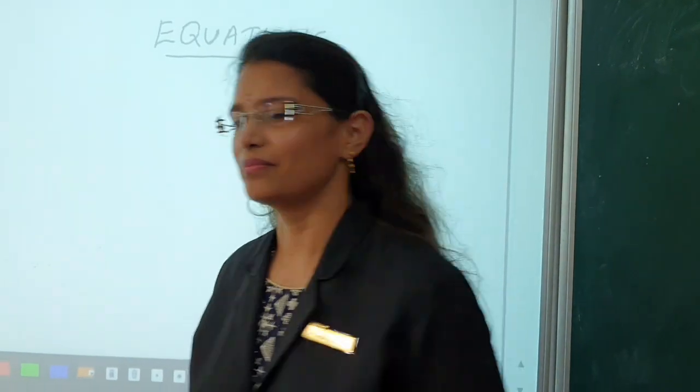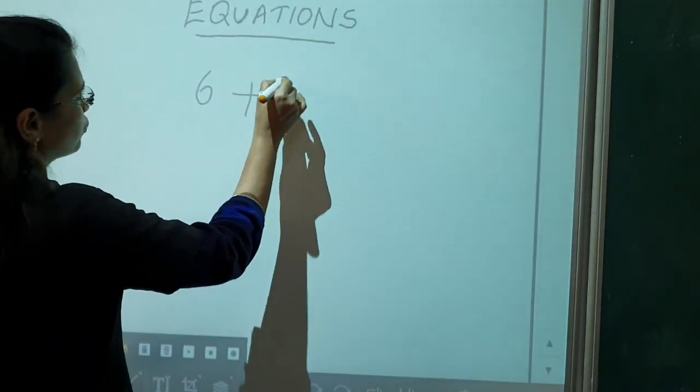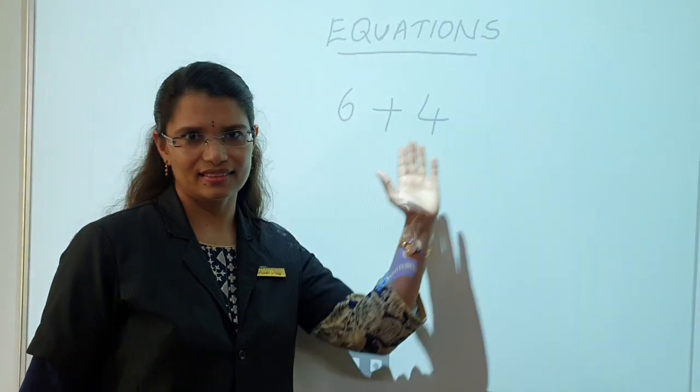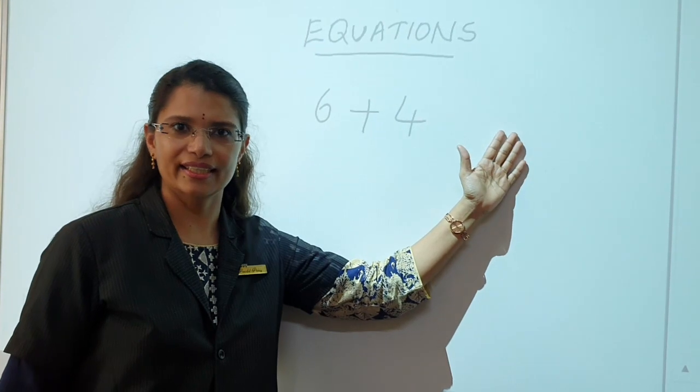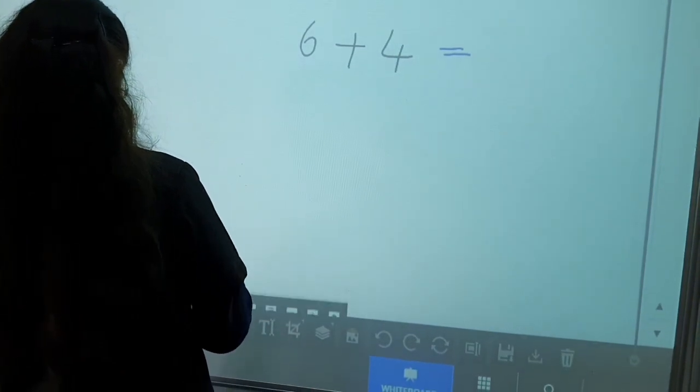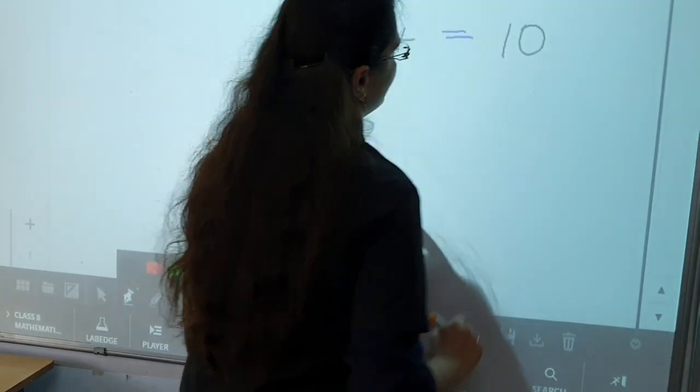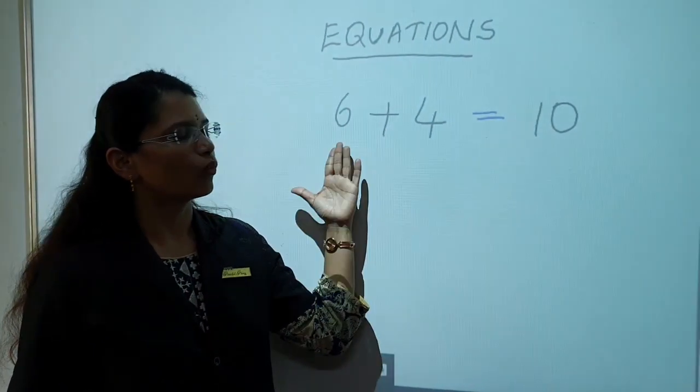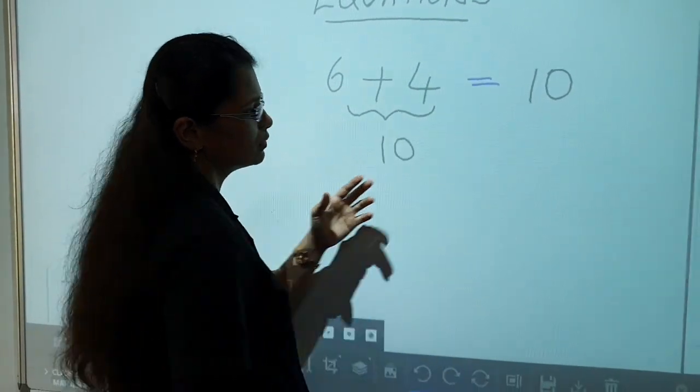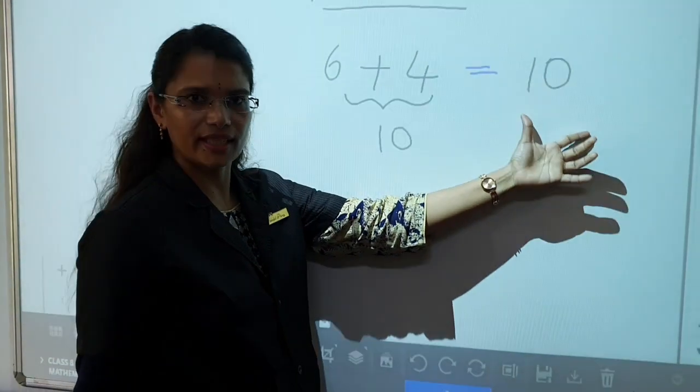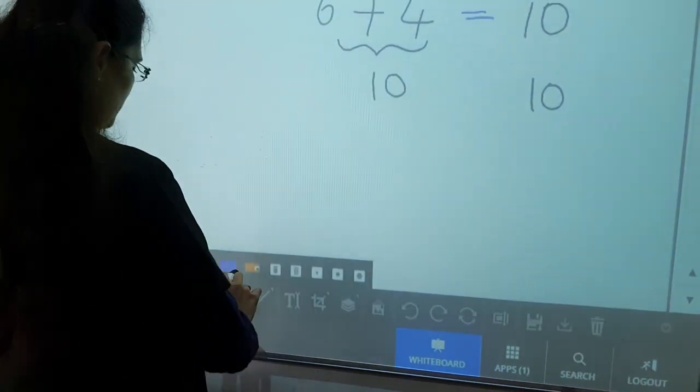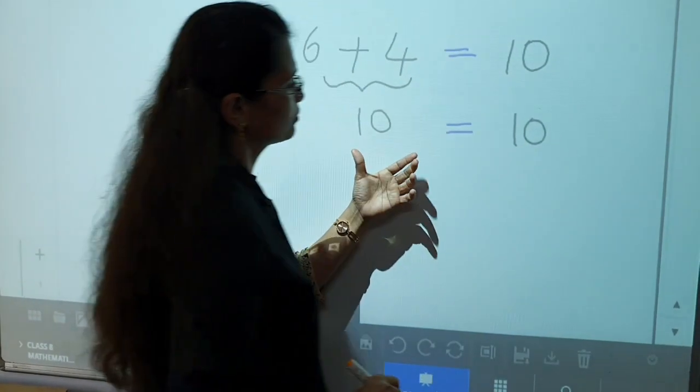For example, 6 plus 4. Is this an equation, children? No. Why? There is no equal sign in it. 6 plus 4 is equal to 10. Here, what is 6 plus 4? 6 plus 4 is equal to 10. And this side also, 10 is here. So you just write 10 here. What is in between? In between, it is equal to.